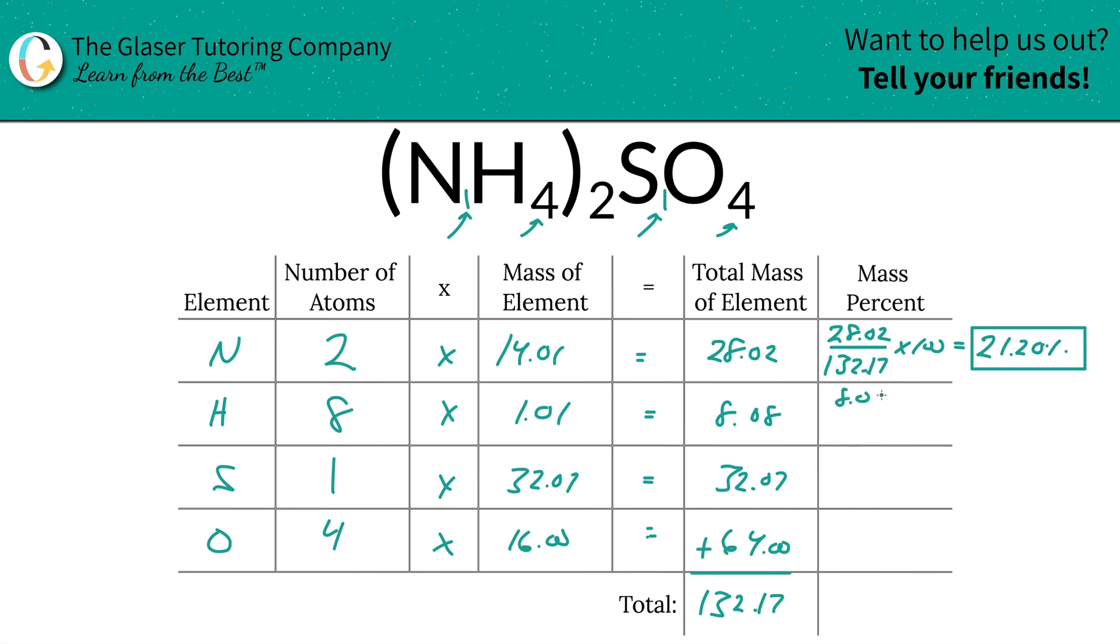For hydrogen, we do the same process: 8.08 divided by 132.17 multiplied by 100, and the percentage there is going to be 6.11 percent.